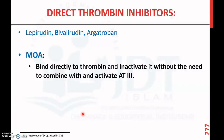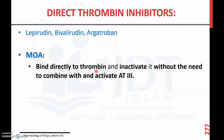Another parenteral anticoagulant group is direct thrombin inhibitors, including lepirudin, bivalirudin, and argatroban. Their mechanism of action differs in that instead of acting indirectly, these direct thrombin inhibitors directly bind to thrombin and inactivate it without needing to combine with antithrombin 3.